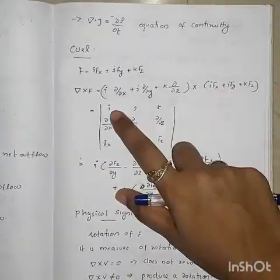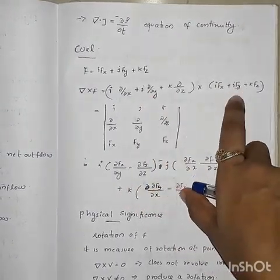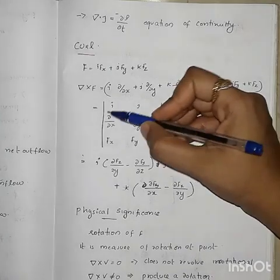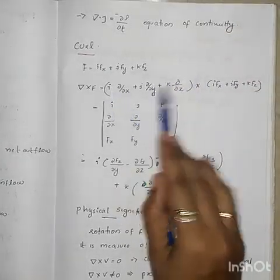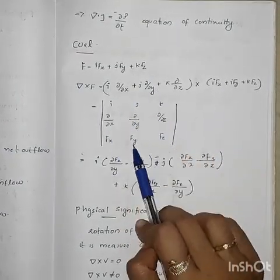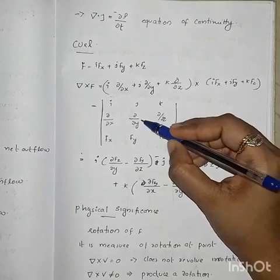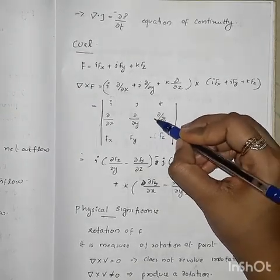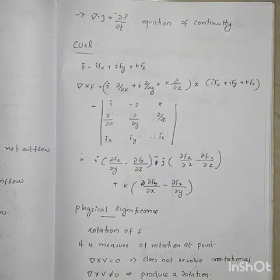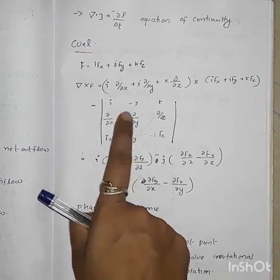Del dot F equals (i ∂/∂x plus j ∂/∂y plus k ∂/∂z) dot (i F_x plus j F_y plus k F_z). For curl, del cross F is computed using a determinant. i corresponds to ∂/∂x and F_x, j corresponds to ∂/∂y and F_y, k corresponds to ∂/∂z and F_z, giving del cross F as the determinant expansion.